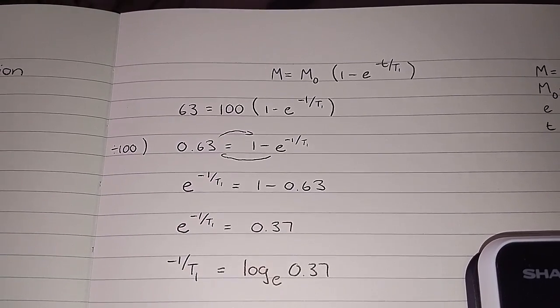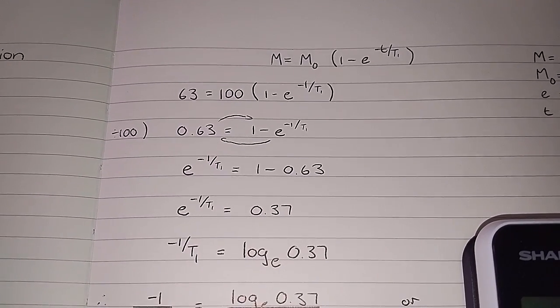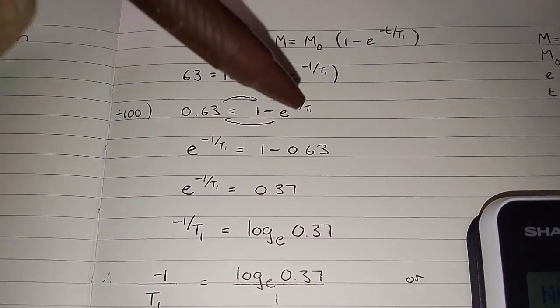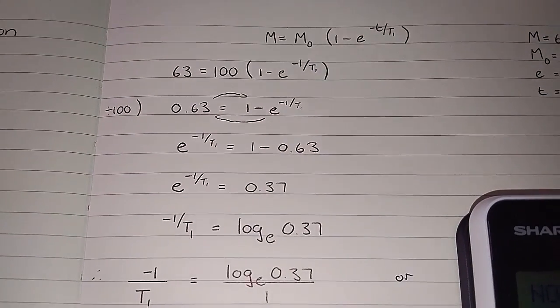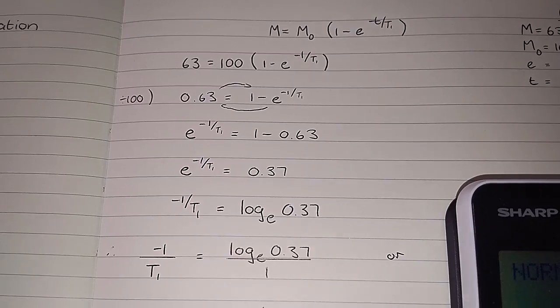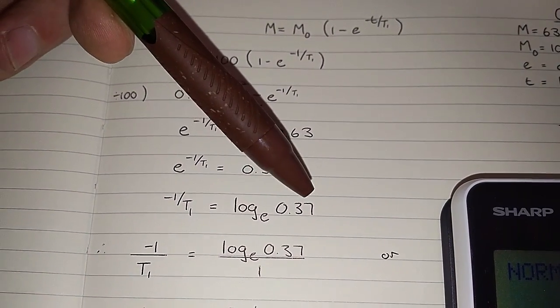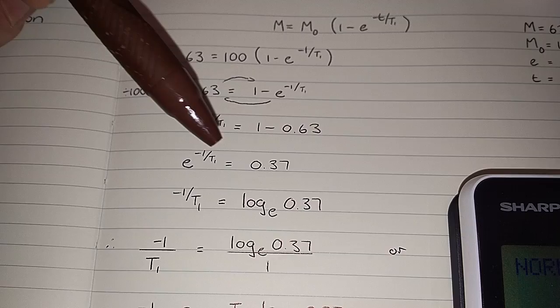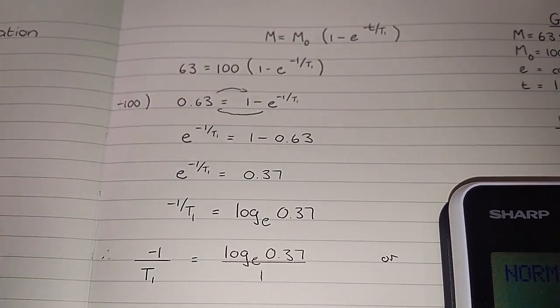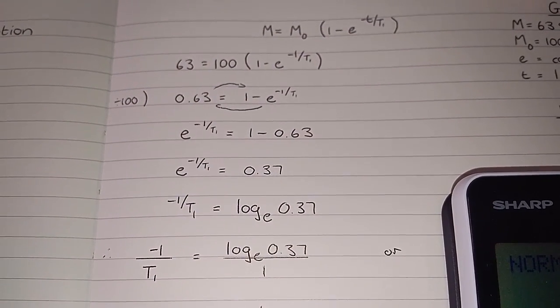So what I've done here basically is just say that log base e 0.37 will then equal that value up there. And this, if you just write it out fully, is essentially log over 1, so I just wrote this out so it's a little easier to see what I'm going to do next.